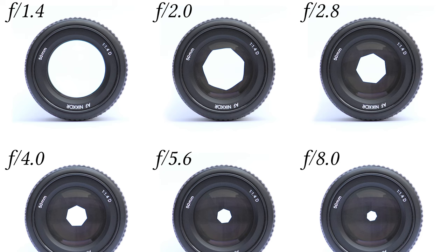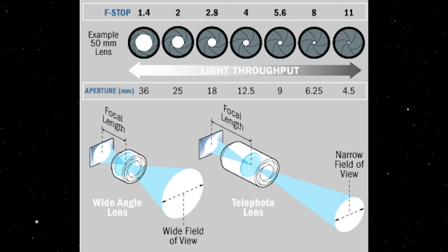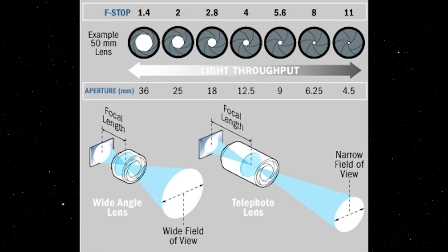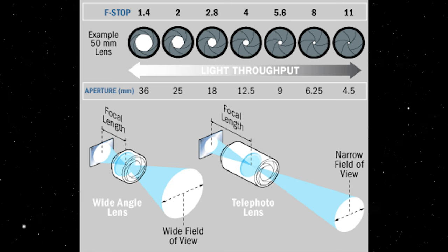Number two is aperture. Aperture is how wide the aperture opens inside the lens. The more open it is, the more light gets let in. The lower the number — referred to as an f-stop — so f1.4, f1.8, the lower that number, the wider the aperture. The higher that number — f22, f18, f16 — the smaller the aperture, so the less light gets let in.